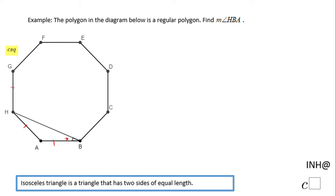In fact, all the sides are congruent, but that means for us that triangle ABH is an isosceles triangle.